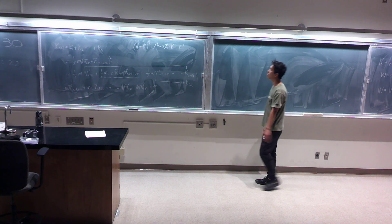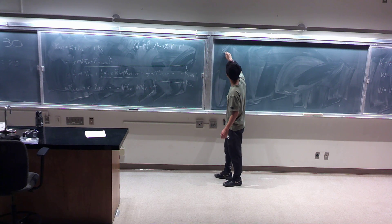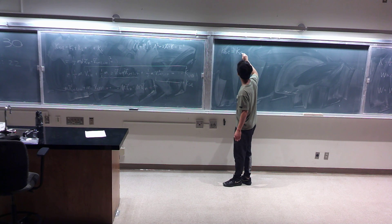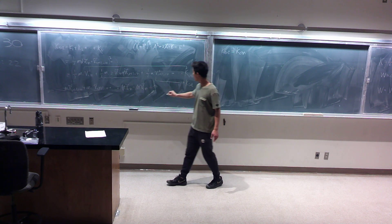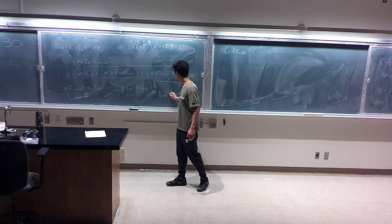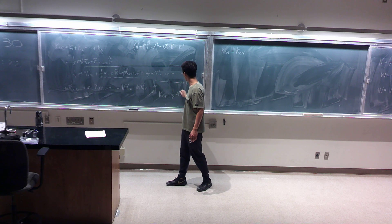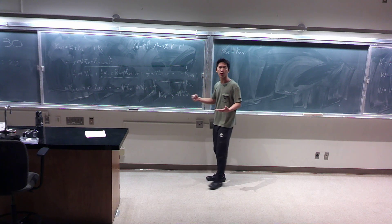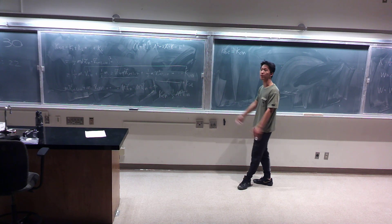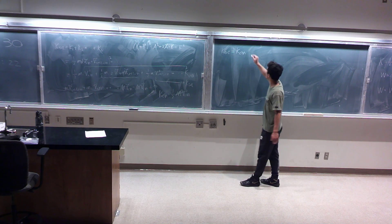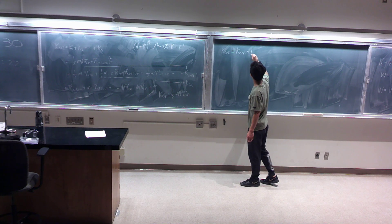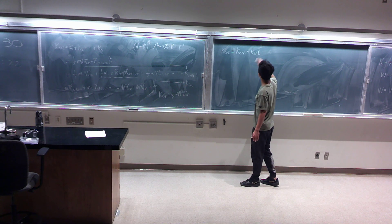So we show that you can write the total kinetic energy of a system as the kinetic energy of the center of mass, which is just one half m v squared for the center of mass. The mass will be the total mass of the system, v_cm is the speed of the center of mass. And you have the internal kinetic energy.